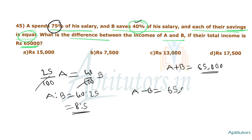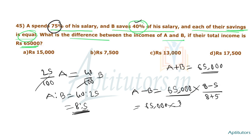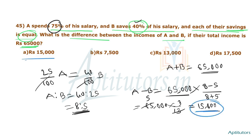A and B together earn 65,000 rupees with ratio 8:5. The difference between their incomes is 15,000 rupees. Option A is the correct answer.